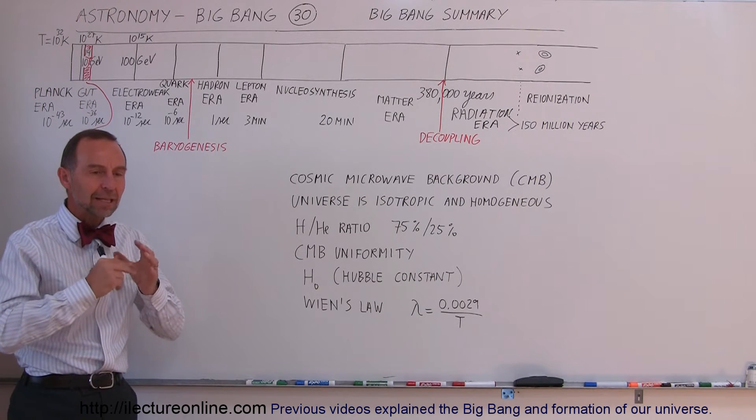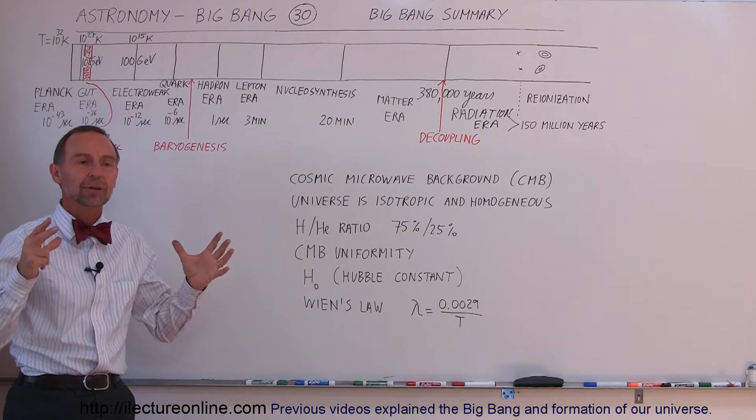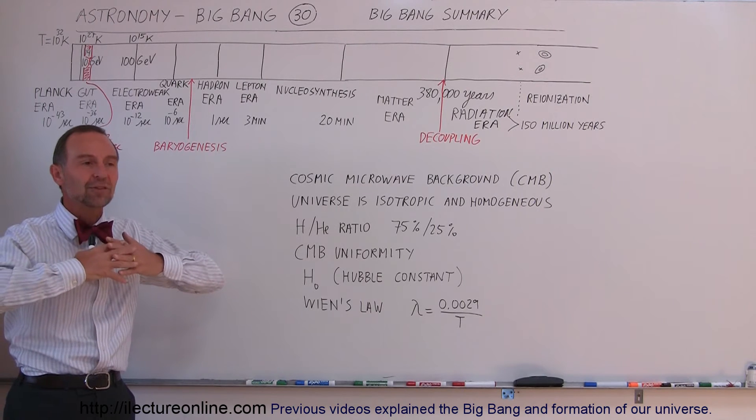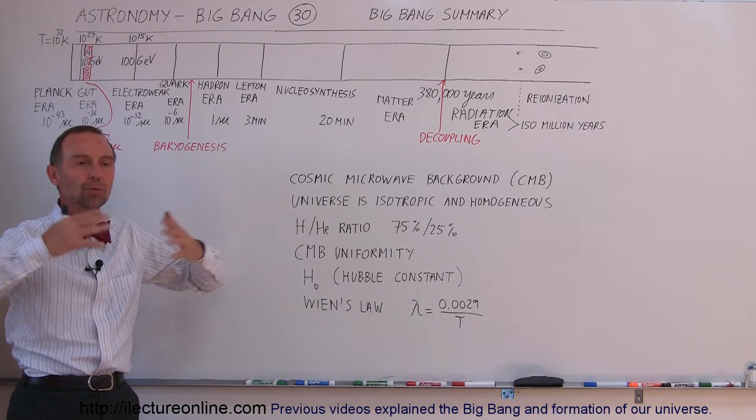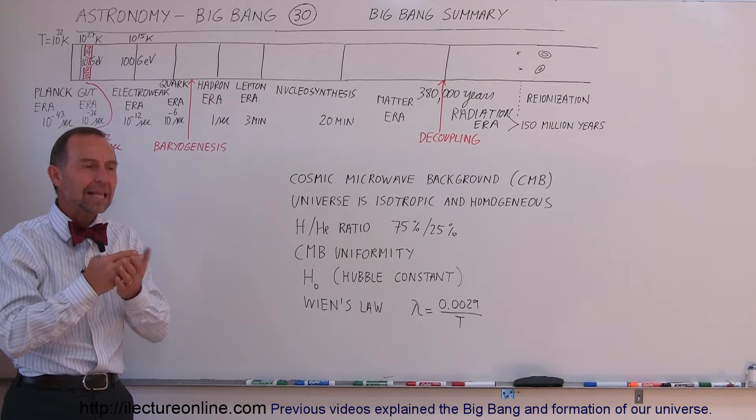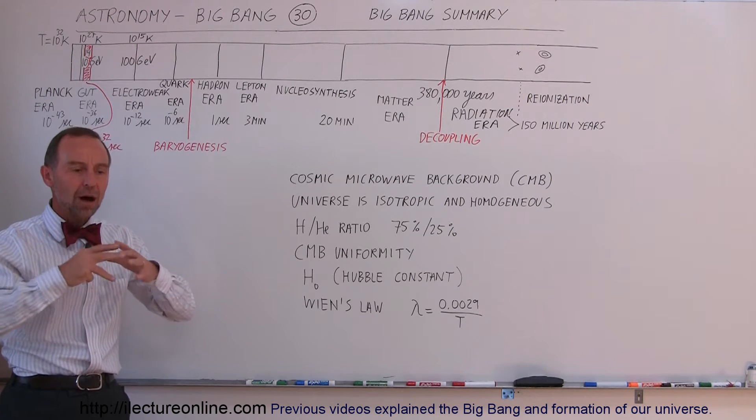We know that there must have been a tremendous inflationary period. Over a very minute period of a second, a very small fraction of a second, the whole Universe must have expanded extremely rapidly to a much greater size than it was before the inflation started. That is the only thing that can explain the extreme uniformity of the background radiation.